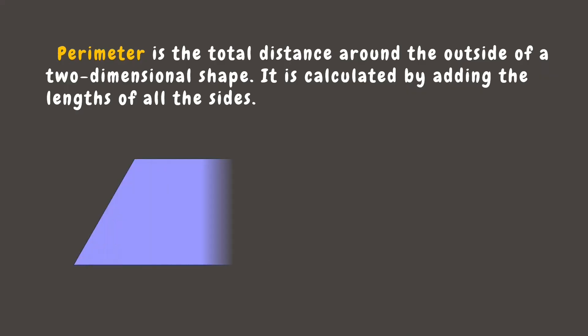For example, we have a parallelogram. Its top and bottom sides both measure 12 meters, while the left and right sides both measure 10 meters. To get its perimeter, let's add all the sides together. So the perimeter of this shape is 44 meters.